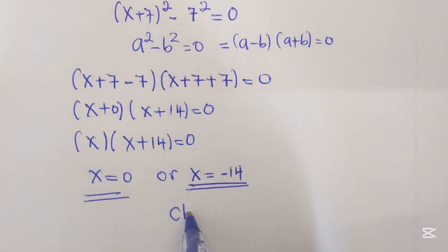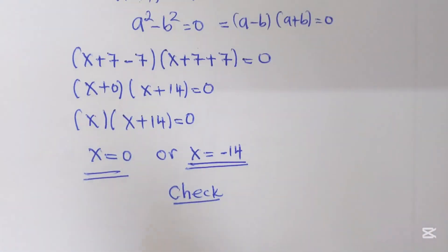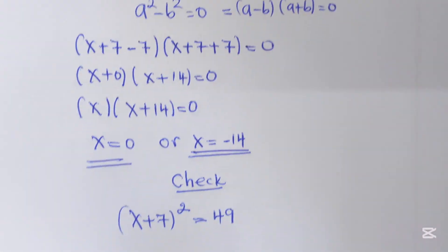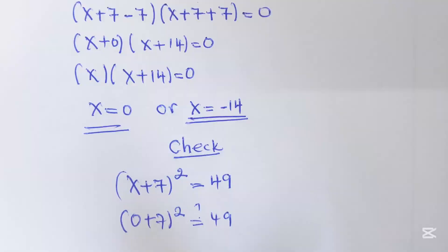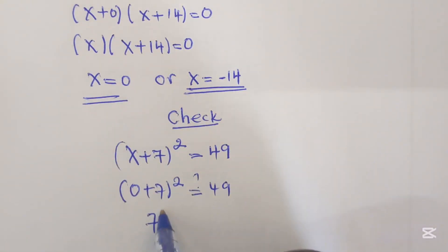We have to check if our answers are correct. We have (x+7)² = 49. Replace with 0: (0+7)² = 49? So 7² = 49, then 49 = 49.